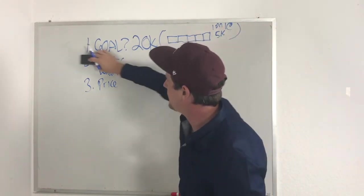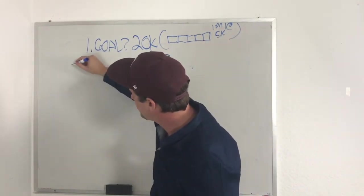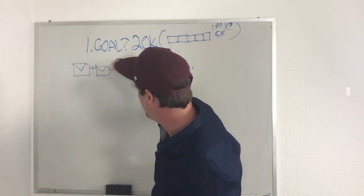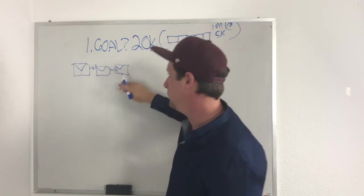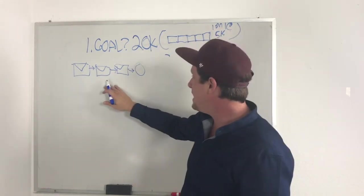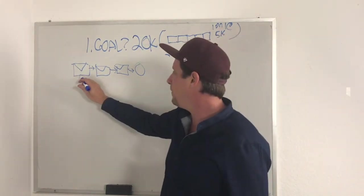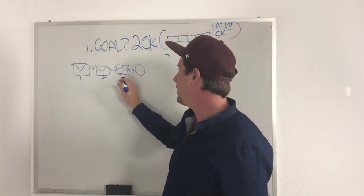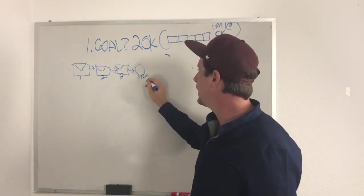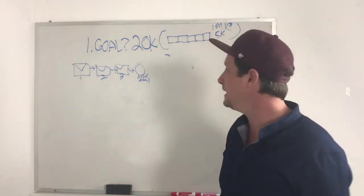So let's go back to the mapping this out. We talked about the idea that we need value, value, value, and then offer. So now what we do is we say, what specifically do I need to do? Well, I have to write one email, I have to write a second email, I have to write a third email, and then I have to write an email that is an offer email. Those are the specific things that you're going to need to do.